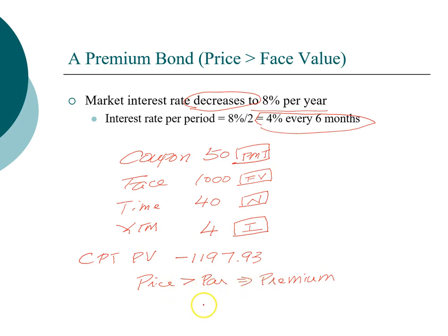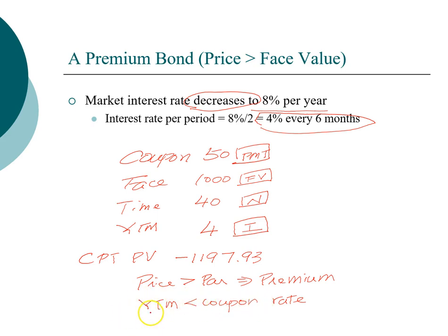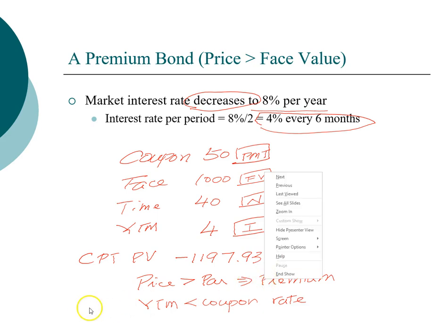The term 'premium' doesn't mean it's a higher-quality bond — it means you're paying a premium because the price is higher than the par value. You're paying a premium because the yield to maturity is now less than the coupon rate on this bond. Your bond offers 10% per year while the market is only offering 8%, so investors are willing to pay more. That higher price is the premium. These are the fundamental bond pricing theories you want to remember.